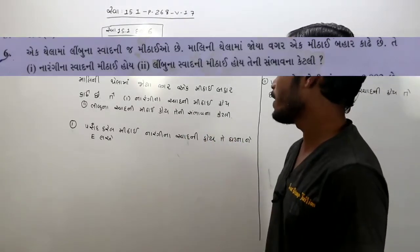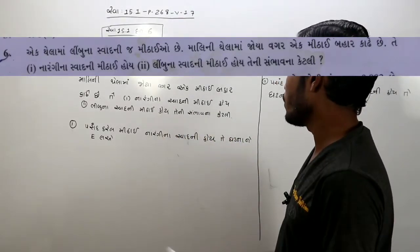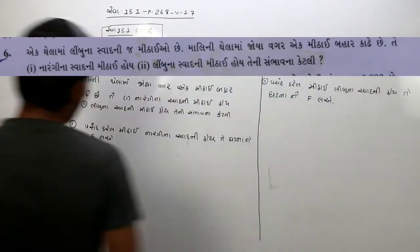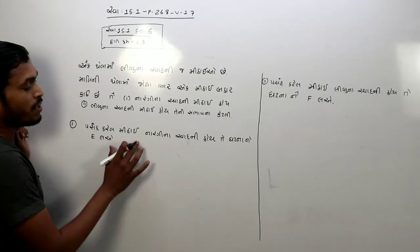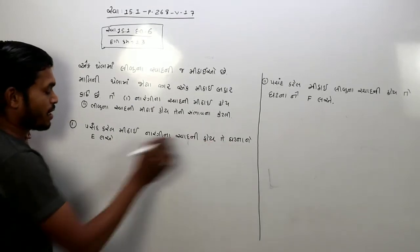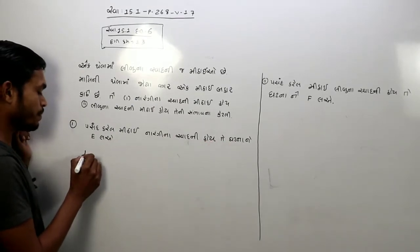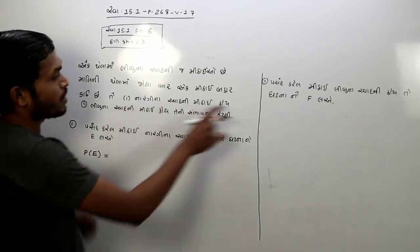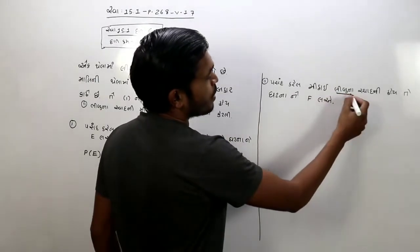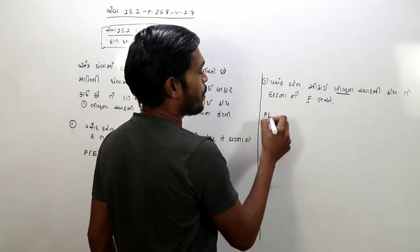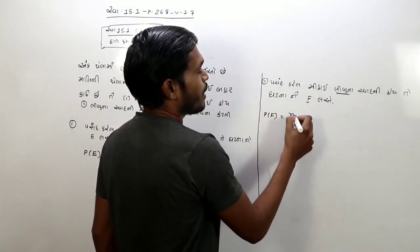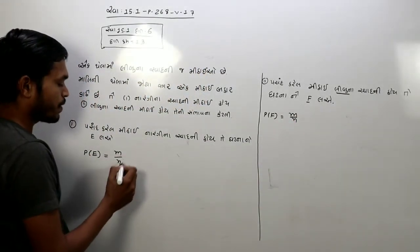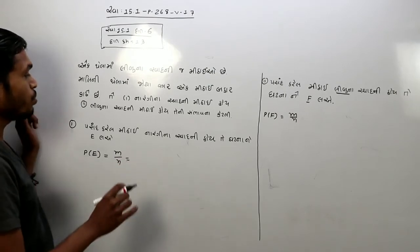બહાર કાડા છે તો નારંગીના સ્વાદની મિઠની ત્યની સંભવના સોધો. સ્વાદની મિઠન કાડની વરાટની મેઠન ખે વર્ણની બતો મધાની સૂત્ર બ્રહની.